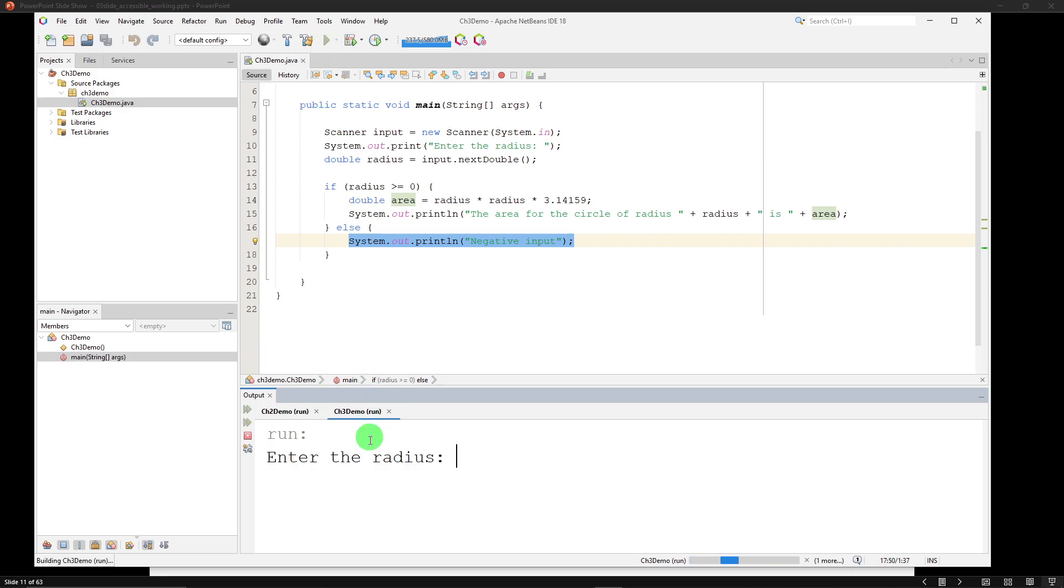If I run it again, and this time I'm going to put in negative five. Okay, this tested false, so it came down to the else block and just printed out negative input. It's not going to calculate the area for a negative radius.